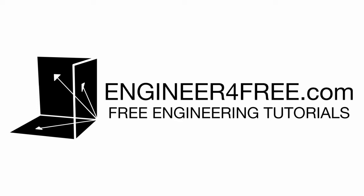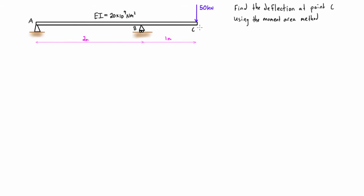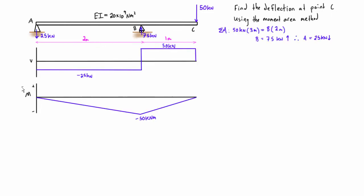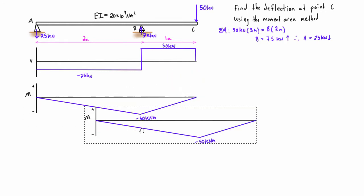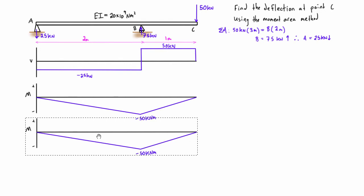Welcome back. In this video we want to find the deflection at point C using the moment area method for this overhanging beam. The first thing we do is draw the free body diagram, shear force diagram, and bending moment diagram. Once we have the bending moment diagram drawn, we make a copy and bring it down below. Then we convert it to the M/EI diagram by dividing every point on the graph by EI.